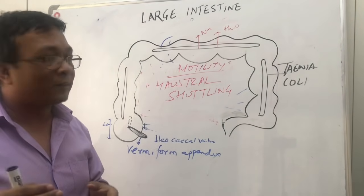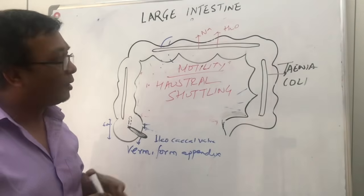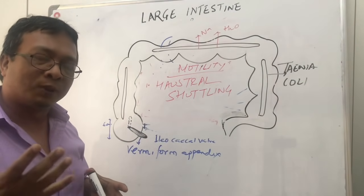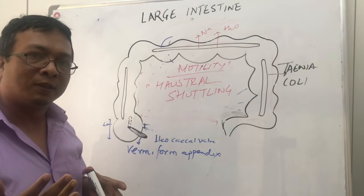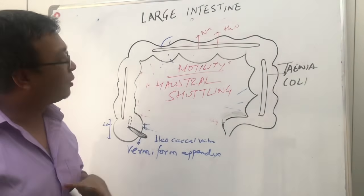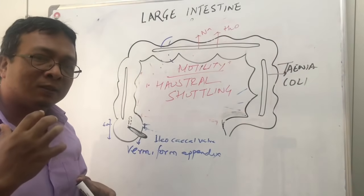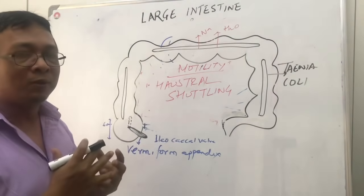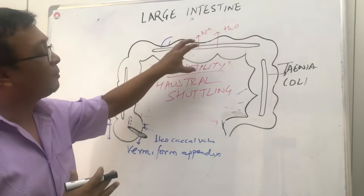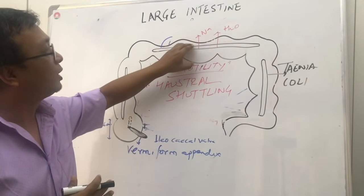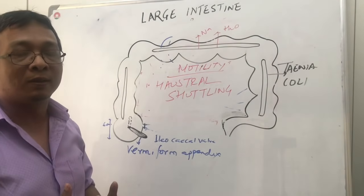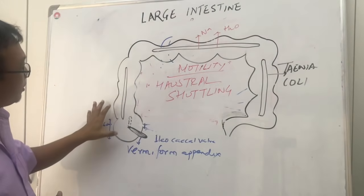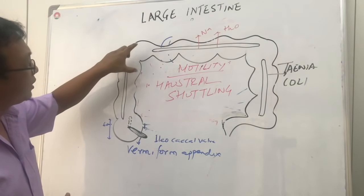So the small intestine has villi and the large intestine has taenia coli. The small intestine is meant for absorption of nutrients, while the large intestine is meant for mixing food and giving time so that sodium and water can be reabsorbed.